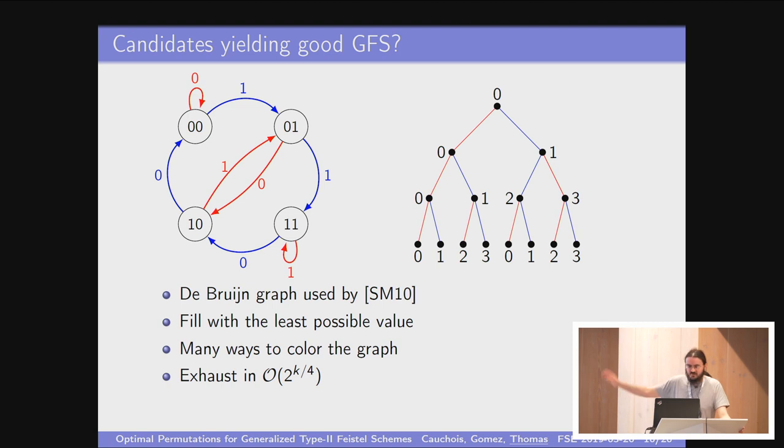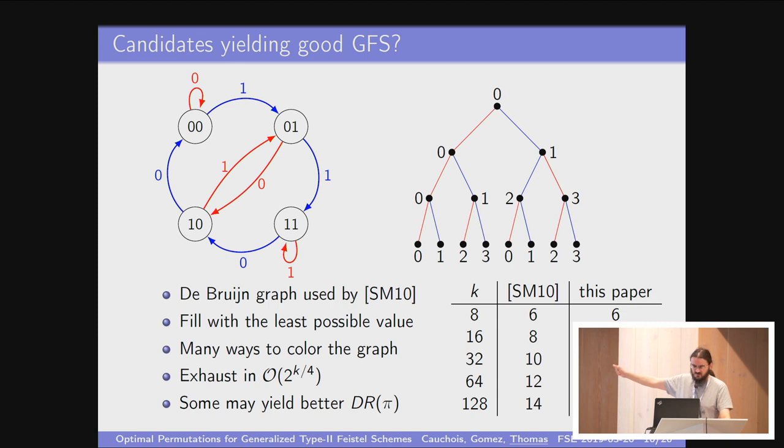This is the coloring used in the Suzaki and Minematsu paper. But actually, you can exhaust all the possible colorings with a complexity of 2 to the K over 4. We did this for K up to 128 and obtained better results. We can gain one round for the 64 and 128 blocks, for the values of K 64 and 128.